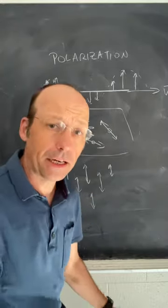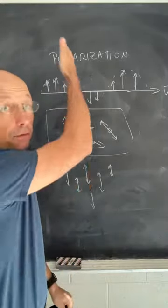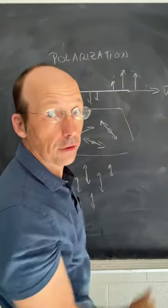Light is an electromagnetic wave. So if we just think about the electric field, we have these fields that oscillate up and down. The electric field oscillates up and down.